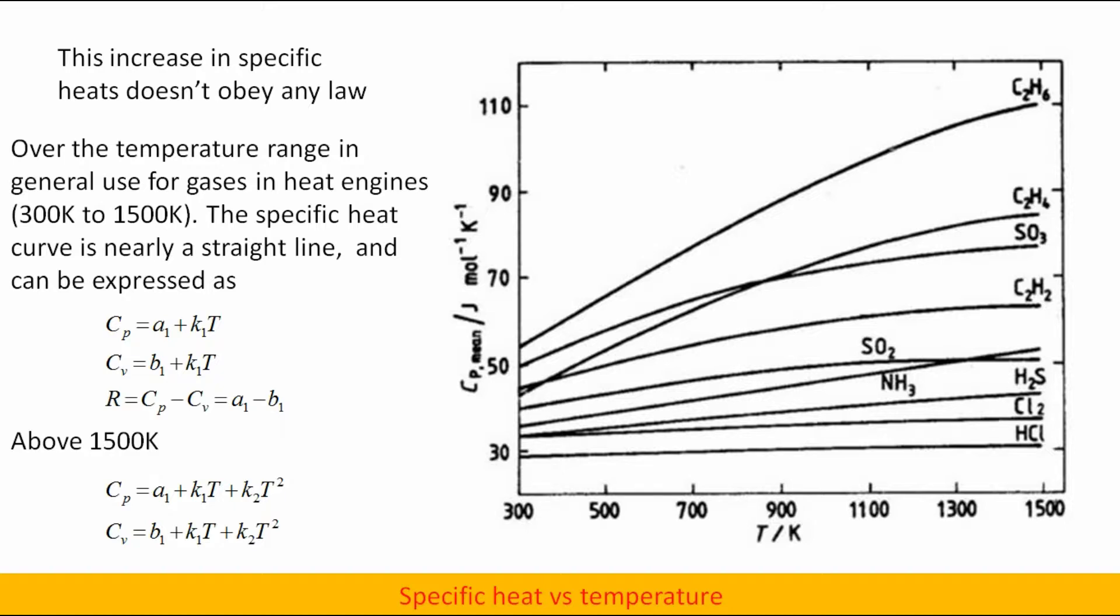Cp = a₁ + k₁T, Cv = b₁ + k₁T, and R = Cp - Cv = a₁ - b₁. Above 1500K the relations are: Cp = a₁ + k₁T + k₂T², Cv = b₁ + k₁T + k₂T².